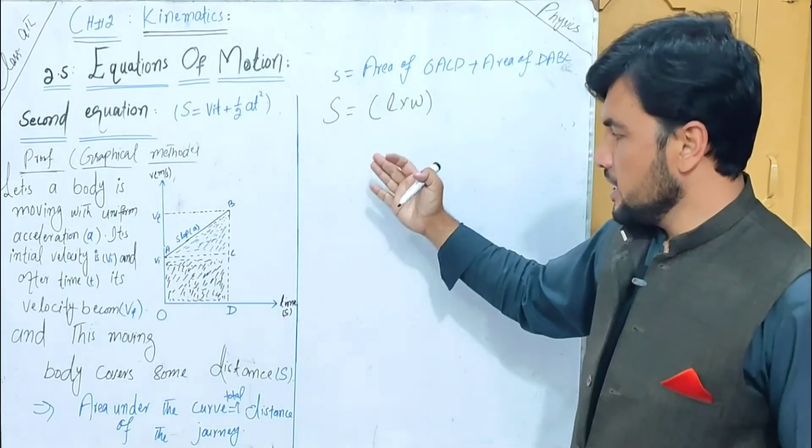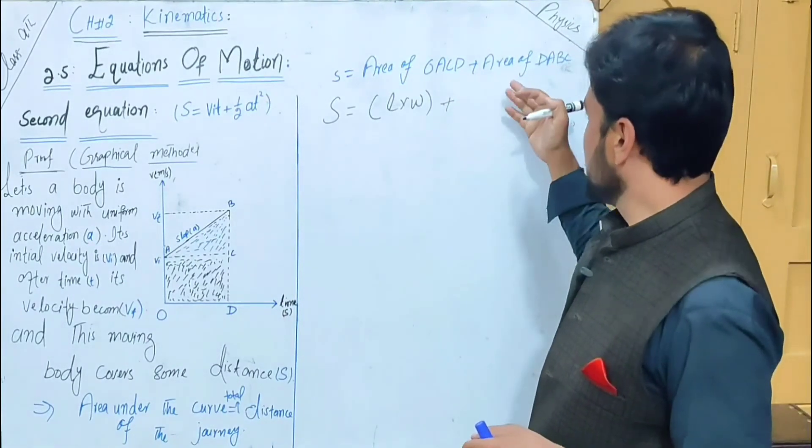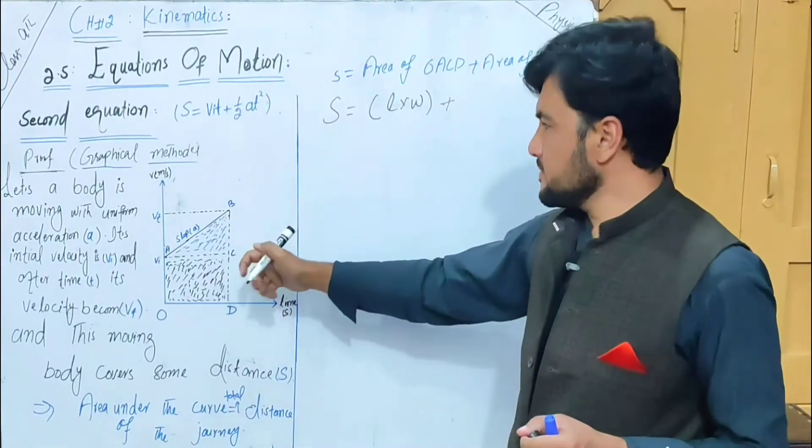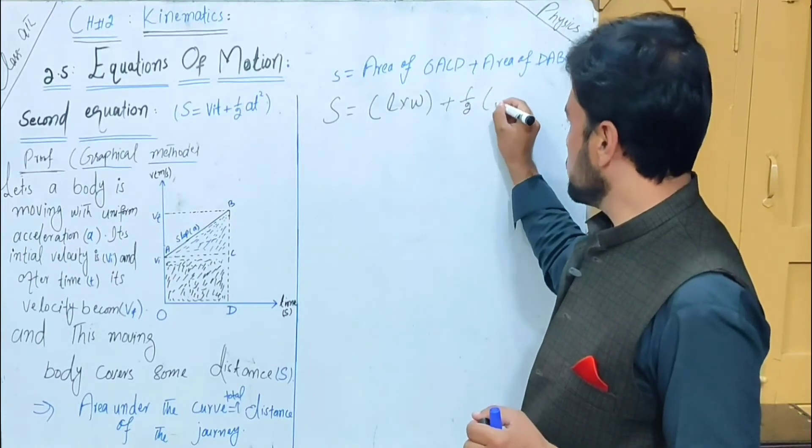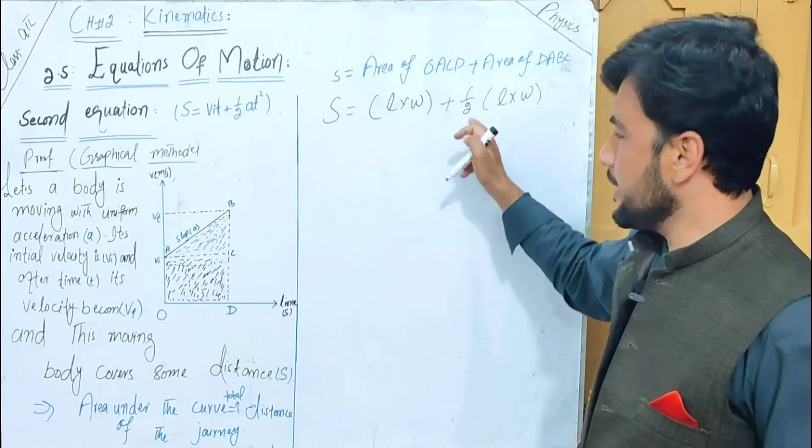L cross W plus the triangle area: one over two into L cross W, length cross width divided by 2.